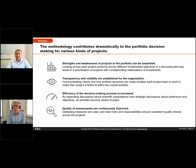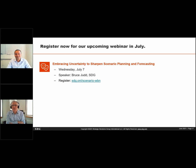It sounds like the decision makers knew what they were looking for in that mountain of information — they were the ones who gave the criteria, so they did not have to spend time thinking about criteria, although there is an upfront effort to get to the fundamental objectives. Before I forget, I want to tell you about the next webinar coming up in July. It's called 'Embracing Uncertainty to Sharpen Scenario Planning and Forecasting' and it takes place on Wednesday, July 7th. Our speaker is Bruce Judd, partner with SDG, so please go ahead and register if you're interested.